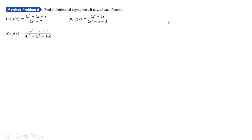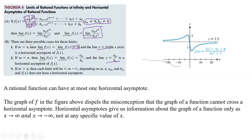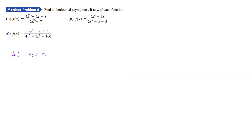We need to find all horizontal asymptotes of each function. For part a, we're looking at degrees 3 and 4, so m is less than n. That's the case where we get a horizontal asymptote at y equals 0. So y equals 0 is the horizontal asymptote.